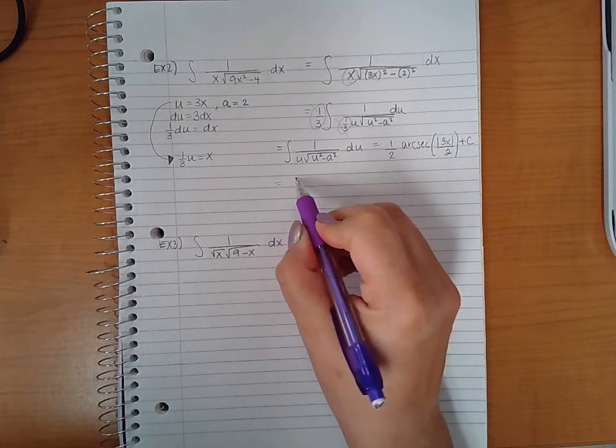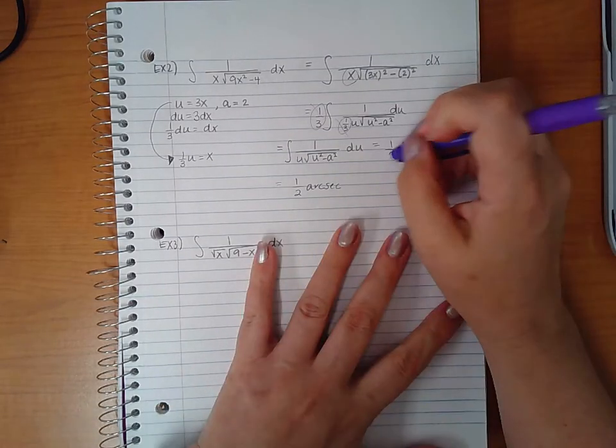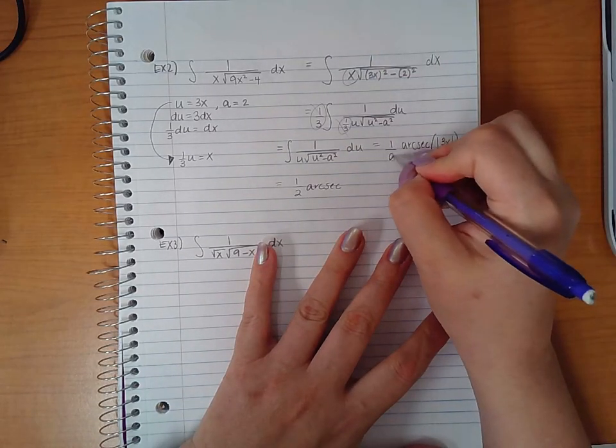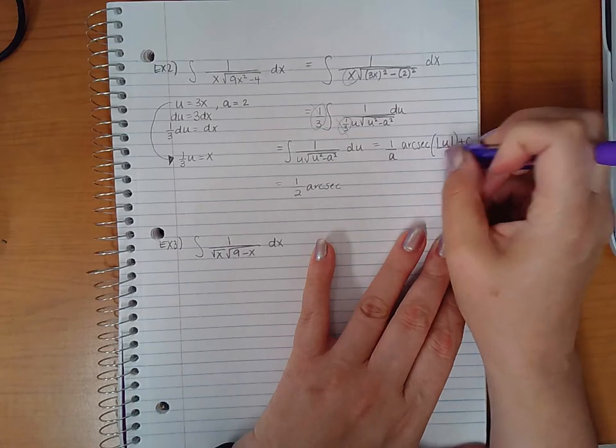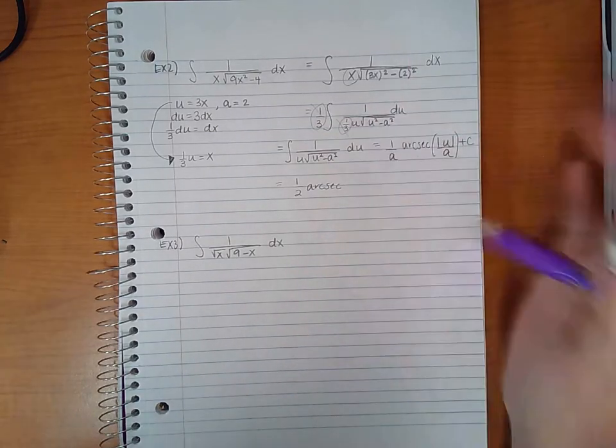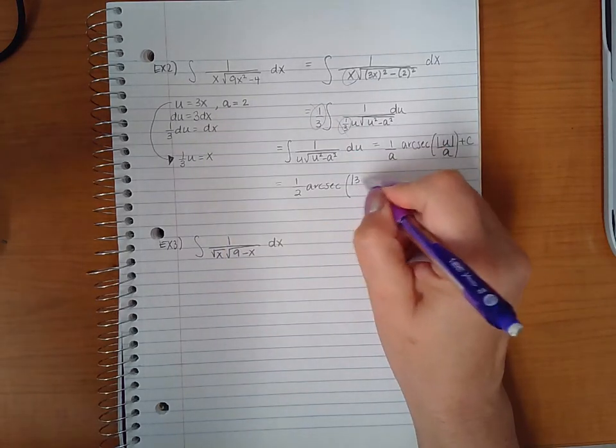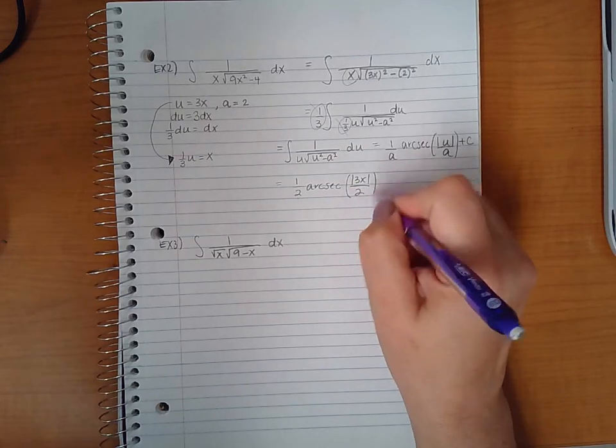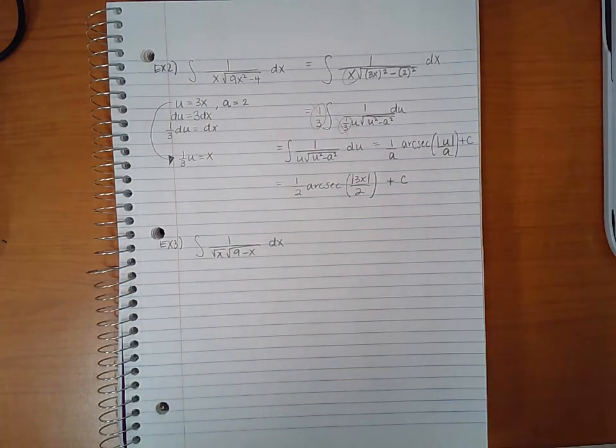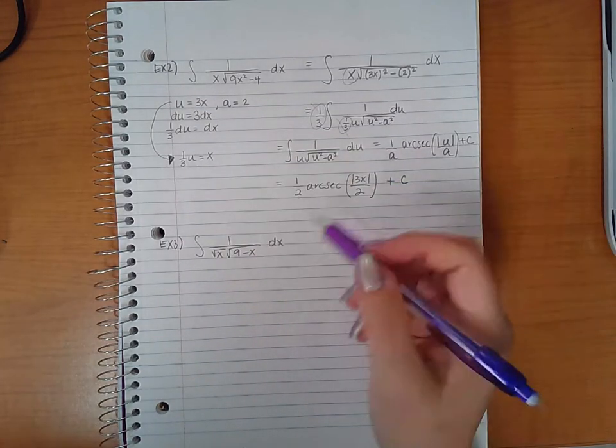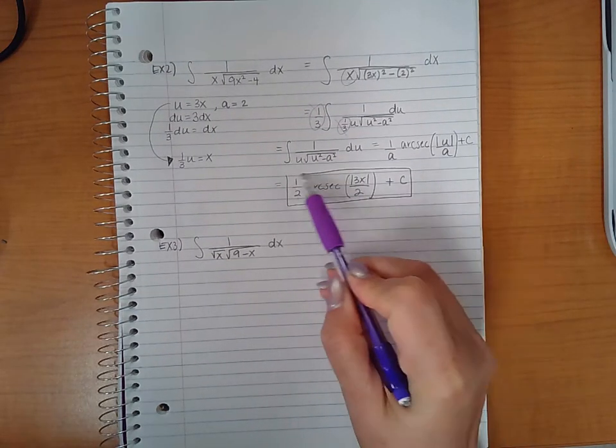So we end up with 1 half arc secant. Oh, I'm sorry. Let's just use the general rule here. So 1 over a, and then the absolute value of u over a. And then if I back sub, we'll go ahead and do that. So a was 2, and then u was 3x, and again a is 2, and then you have your plus c. And this expression can be left like this. So then you just box this, and that is your final answer.